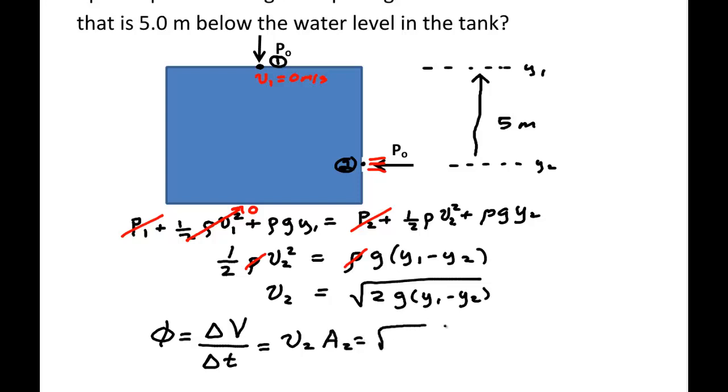So that's the square root of 2G Y1 minus Y2, which is 5 meters, times pi times D over 2 squared, where D is the diameter.